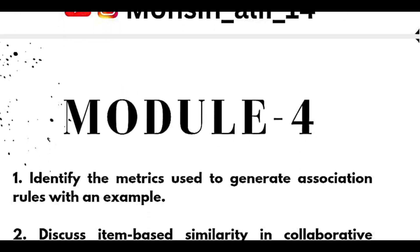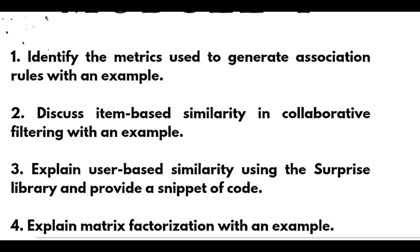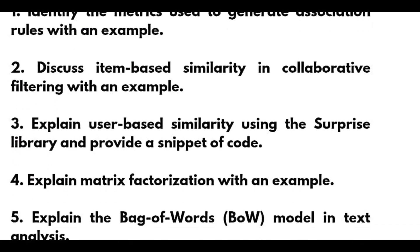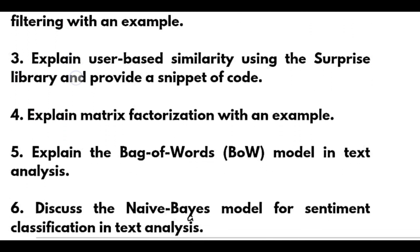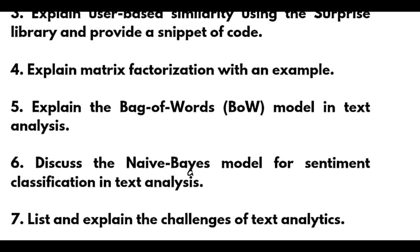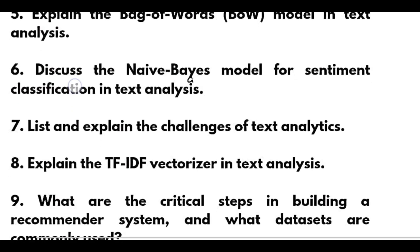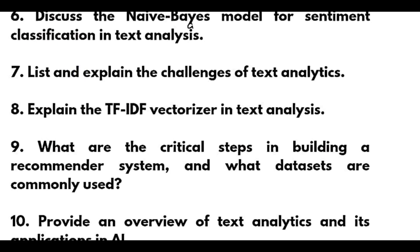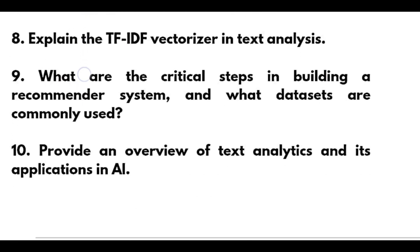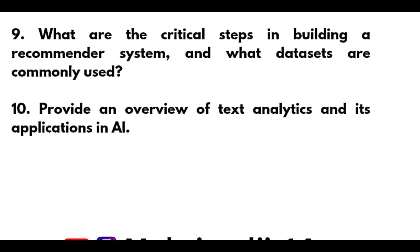For Module 4, students who want to pass can refer to three modules fully and take two to three questions from Module 4 and Module 5. Module 4 questions include: identify the matrix used to generate association rules with an example; discuss item-based similarity in collaborative filtering; explain user-based similarity using the Surprise library with a code snippet; explain matrix factorization; explain the Bag of Words model in text analysis; discuss the Naive Bayes model for sentiment classification — the most important one; list challenges of text analytics; explain the TF-IDF vectorizer; discuss critical steps in building a recommender system and datasets used; and provide an overview of text analytics and its applications in AI.